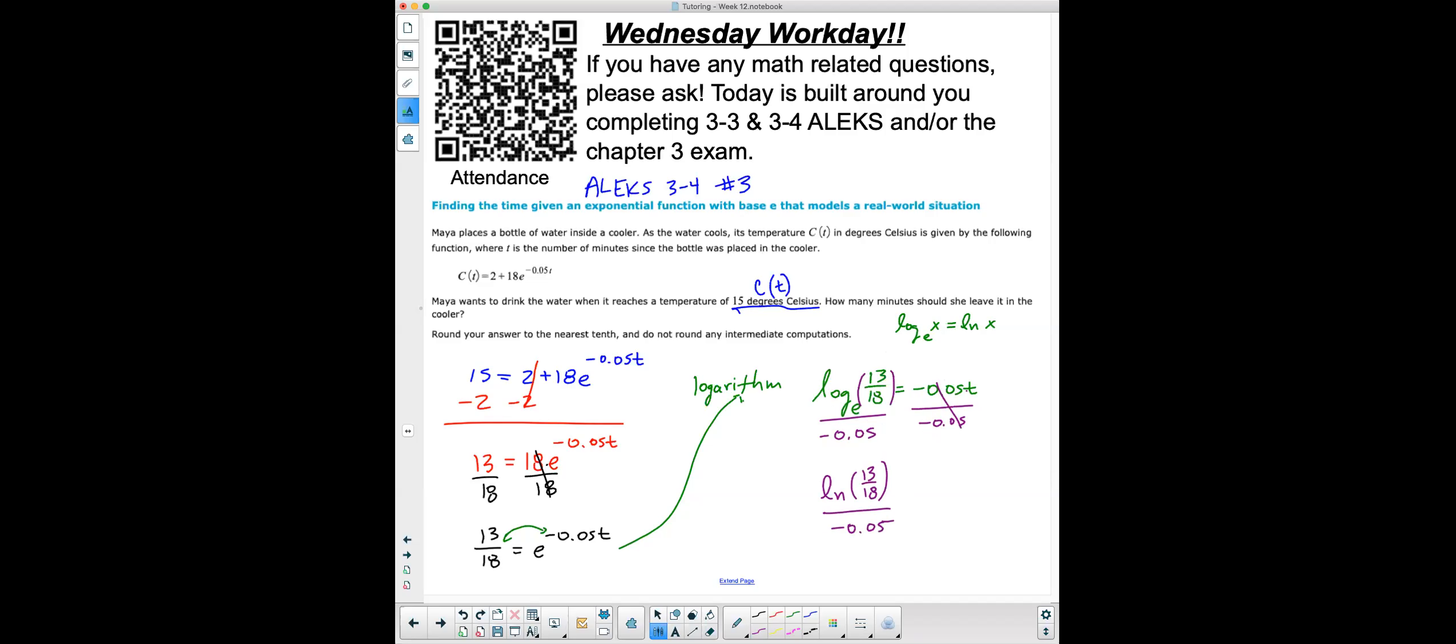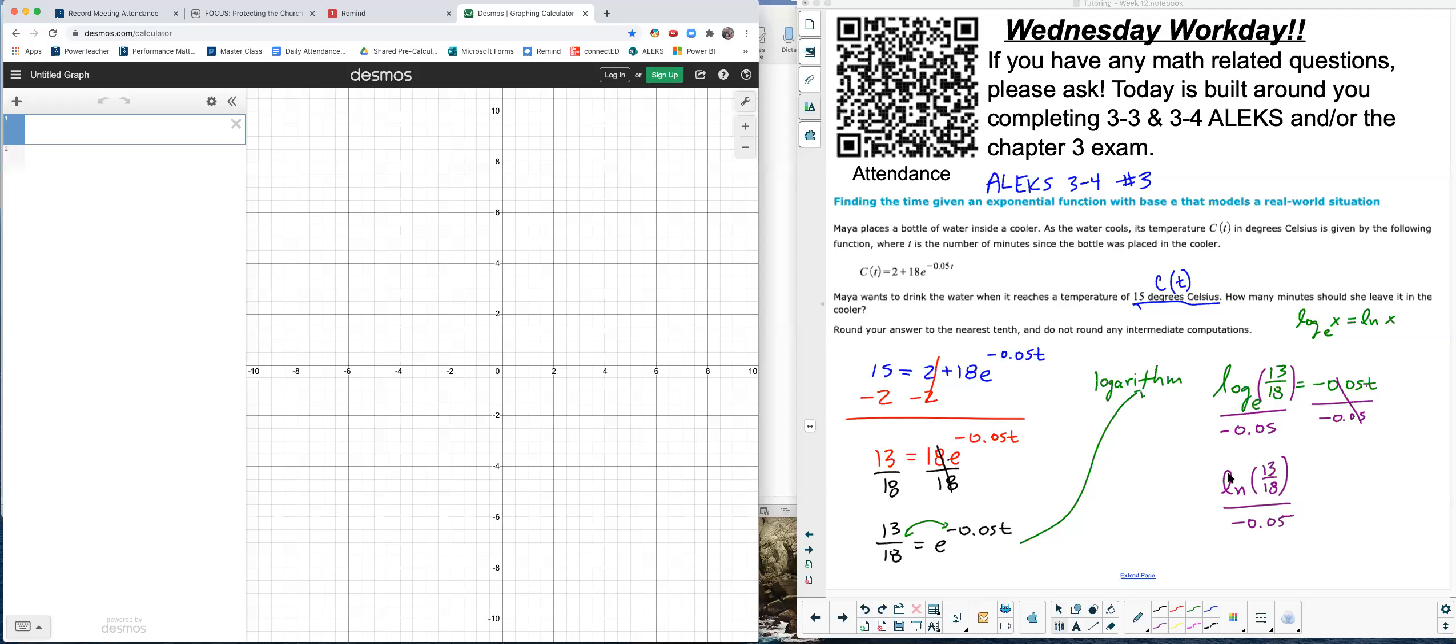So I'm going to type this in the calculator to find our solution to T here. All that right there should give me my T. And so I'll come over to my Desmos. I'll type that in natural log, that's ln of 13 divided by 18, all this divided by negative 0.05. That should be my answer. That's how many minutes I should wait. And so T would equal 6.508.